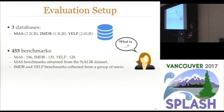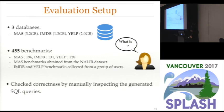For the IMDB and Yelp databases, we did not have existing queries available, so we conducted a user study and asked various people to come up with queries they would like to answer about movies, directors, actors, and combinations of those. In total we have 455 benchmarks. We used SQLizer to translate each English description into an SQL query, then manually inspected the results to determine whether the intended query was ranked within top K for different values of K.